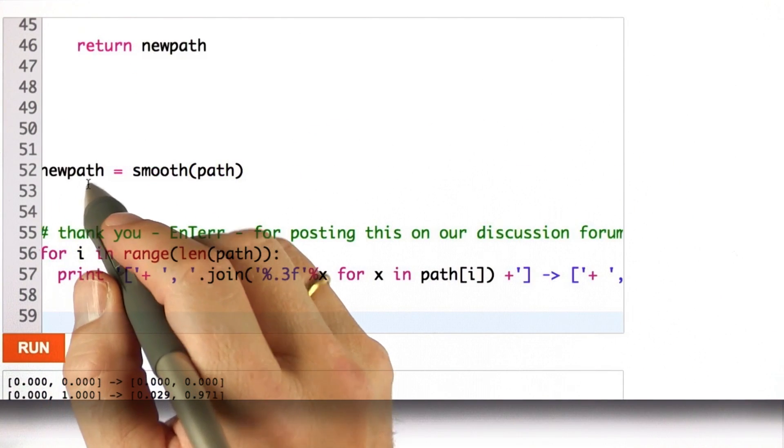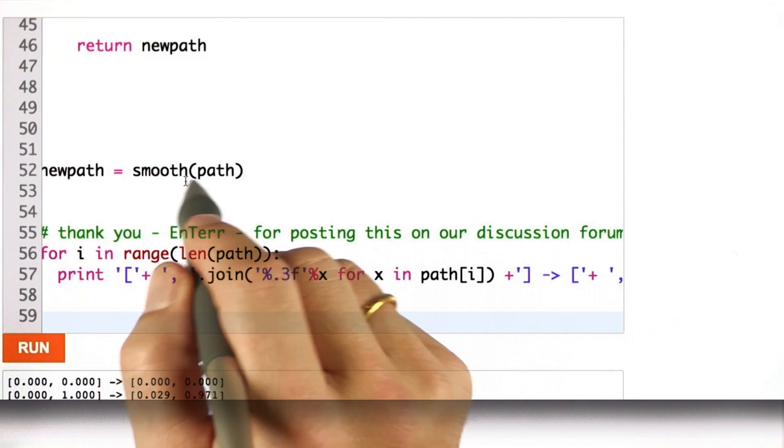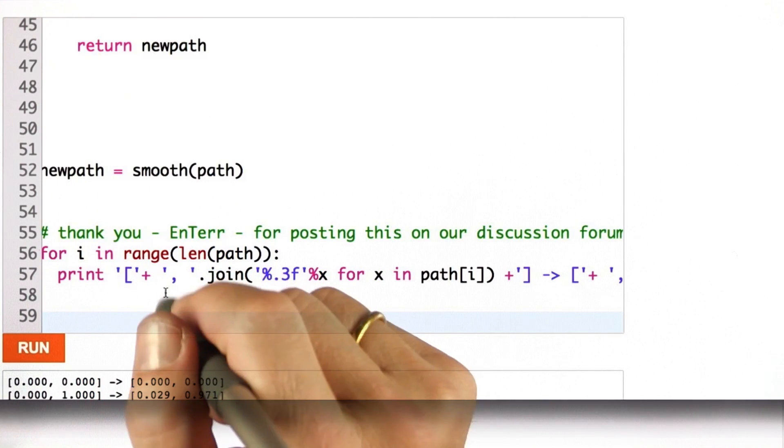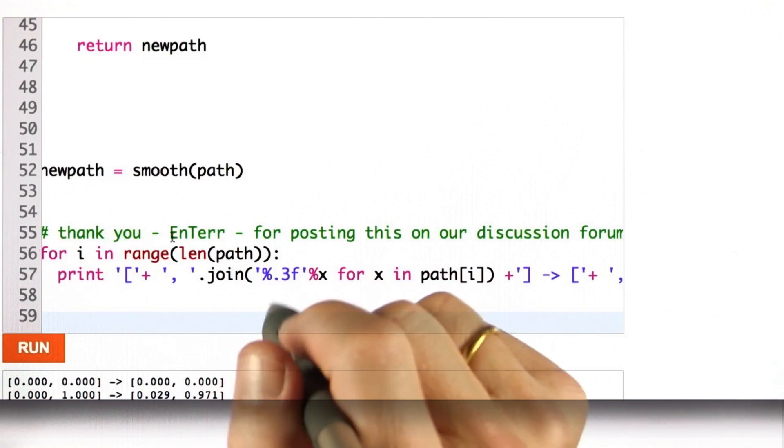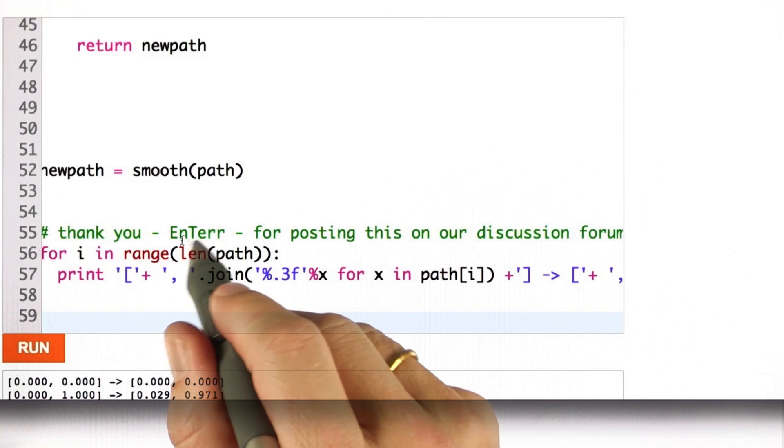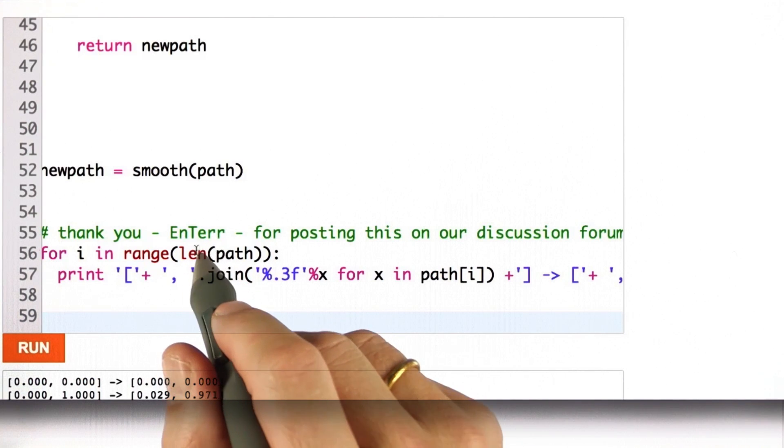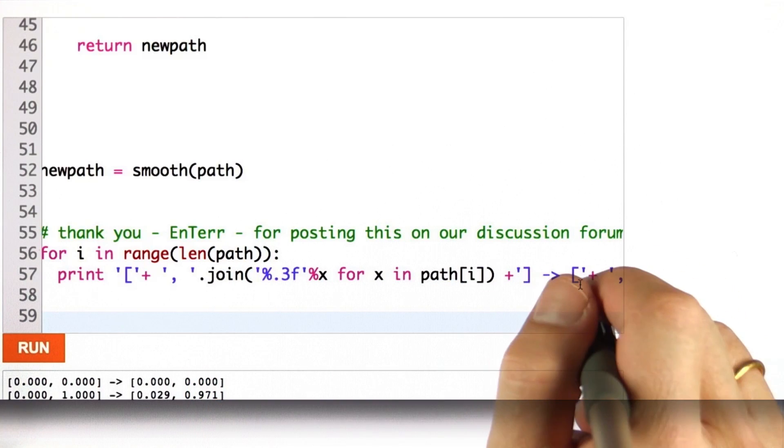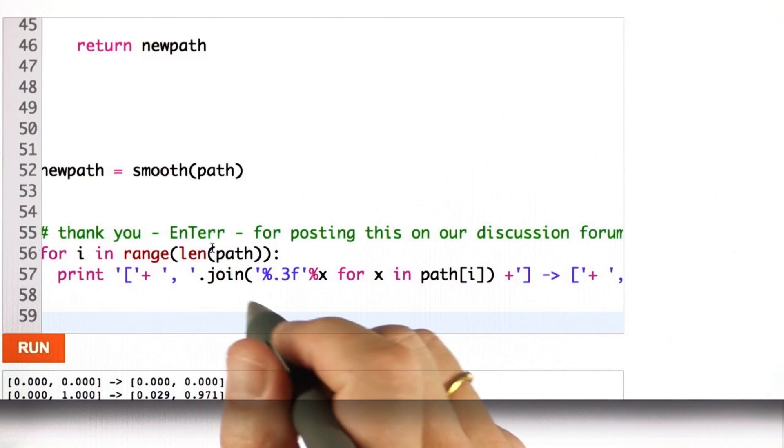So, here's my command. I compute a new path as a result of the function smooth. And in your test, you should uncomment the new path smooth routine and the print routine that outputs my result. Thanks to a student who posted code to output matrices on a discussion forum, I'm going to use his code or her code. Thank you so much.